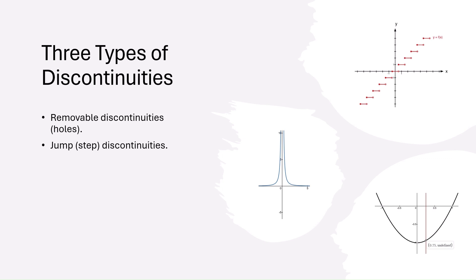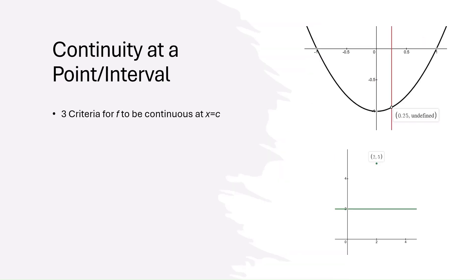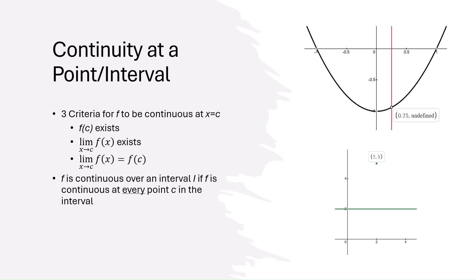There are three types of discontinuities. Removable, where there is a hole in the graph. Jump, where the function leaps to another value. And infinite, which occur near vertical asymptotes. Identifying these is important for discussing continuity. For a function to be continuous at a point, three conditions must be met: the function must be defined at that point, the limit exists at that point, and the value of the function equals the limit. Continuity over an interval means the function is continuous at every point in that interval.